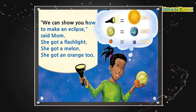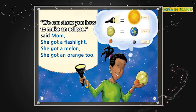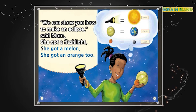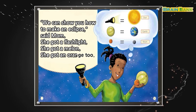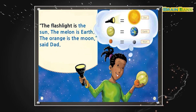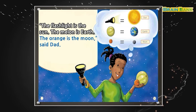We can show you how to make an eclipse, said Mom. She got a flashlight. She got a melon. She got an orange too. The flashlight is the sun, the melon is Earth, and the orange is the moon, said Dad.